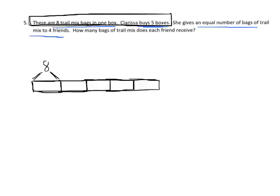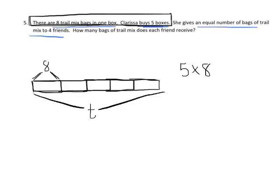The question is: what's the total? The directions don't tell us to use any particular label, so I'm going to label the whole thing as T for trail mix. We want to solve that. We're going to do 5 times 8 — five groups of 8 — which is equal to T. So T is equal to 40 bags.